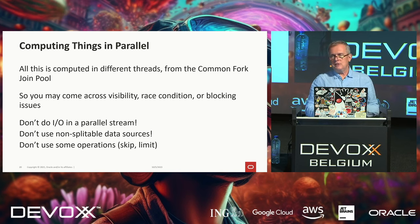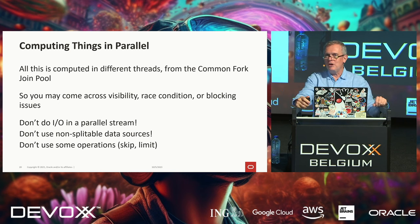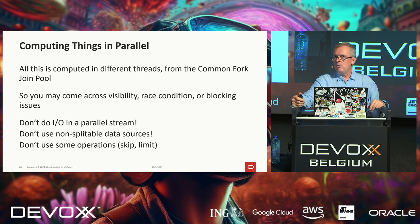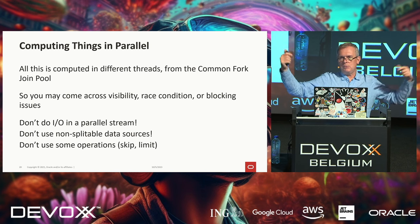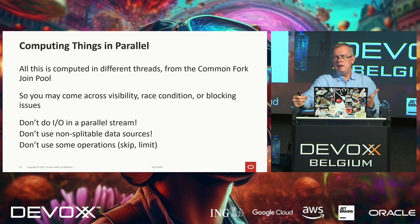When using parallel streams, everything is based on threads running on the common fork-join pool. This means if you didn't program things correctly, you may encounter all the classic problems of concurrent programming: race conditions, blocking issues, and visibility issues that will slow down your entire process.